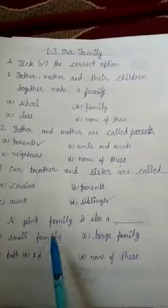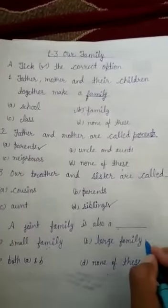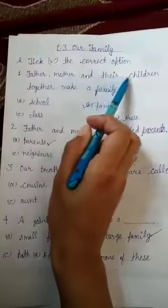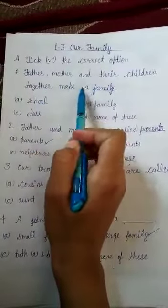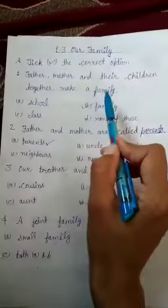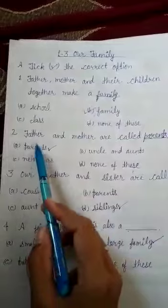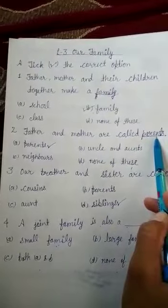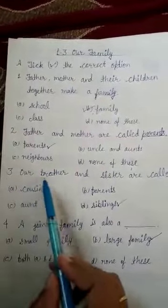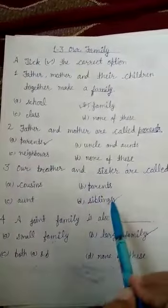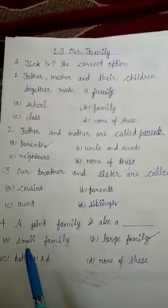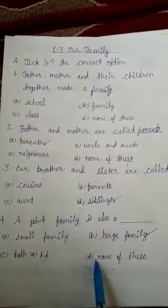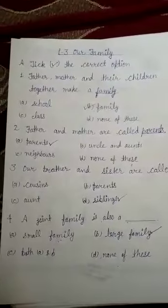Father, mother and their children together make a family. Second question: father and mother are called parents. Third number: our brother and sister are called siblings. Fourth number: a joint family is also a large family. Okay, thank you.